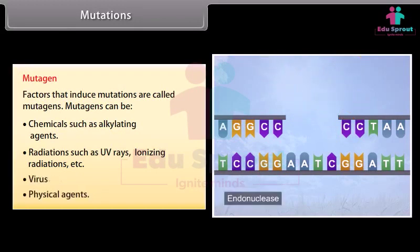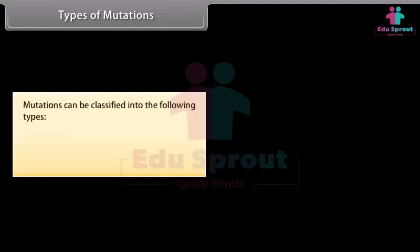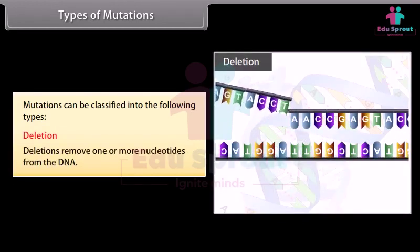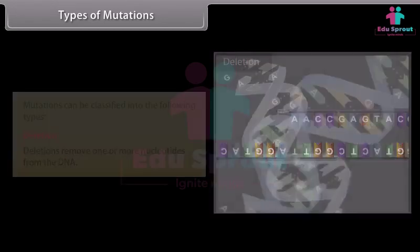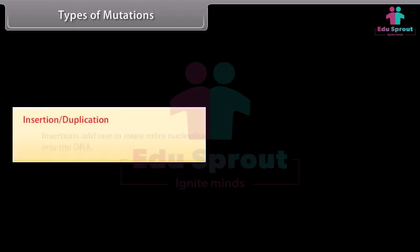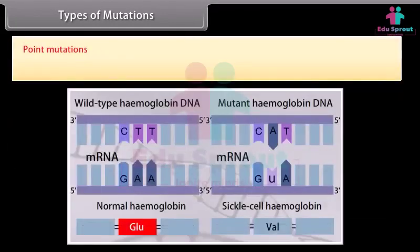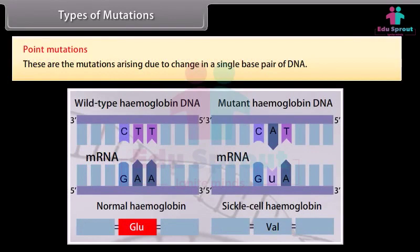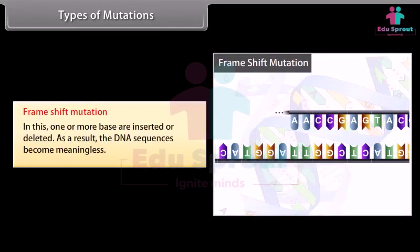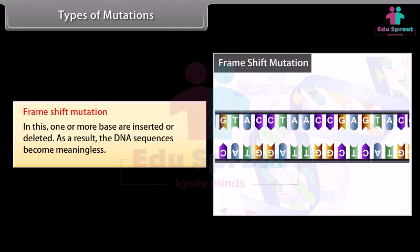Mutagens also include viruses and physical agents. Types of mutations: Deletion — removes one or more nucleotides from the DNA. Insertion or duplication — adds one or more extra nucleotides into the DNA. Point mutations — arise due to change in a single base pair of DNA. Frame shift mutation — one or more bases are inserted or deleted, causing the DNA sequence to become meaningless.